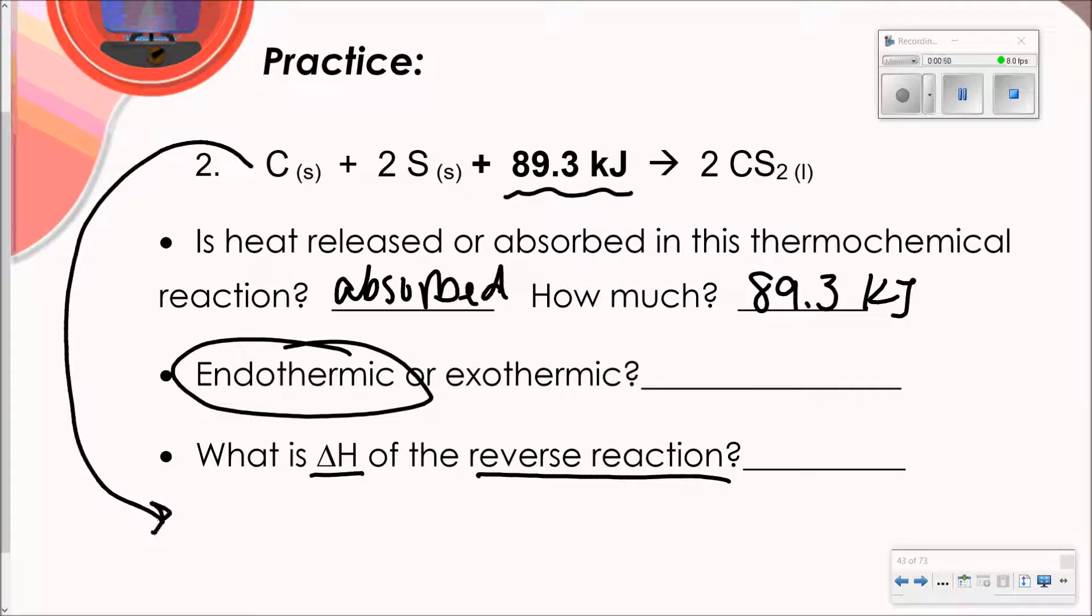So I'm going to simply switch it. Now I'm going to say my reactant is that. And now my new products are going to be the reactants from the previous equation. So I've got the 1 mole of carbon plus the 2 moles of sulfur. And then I'm going to add in that 89.3 kilojoules.